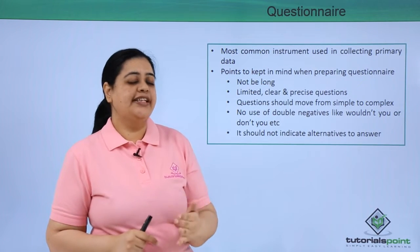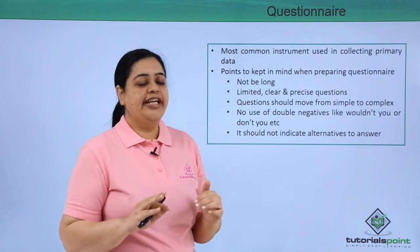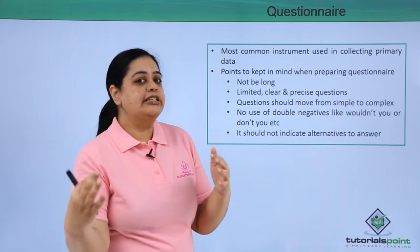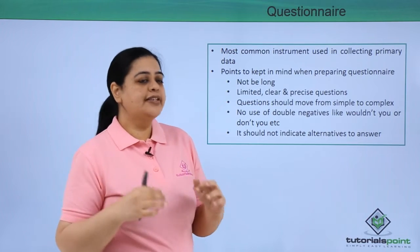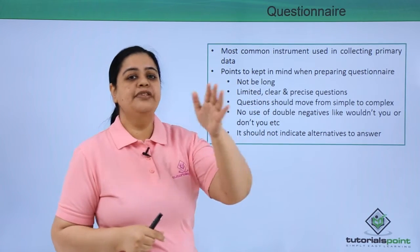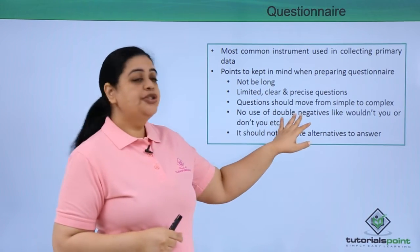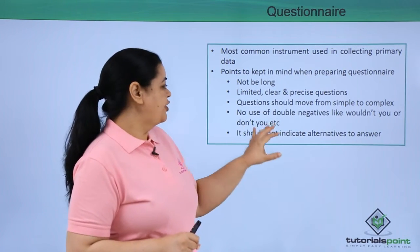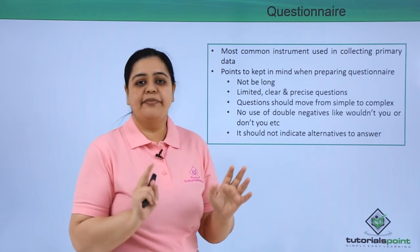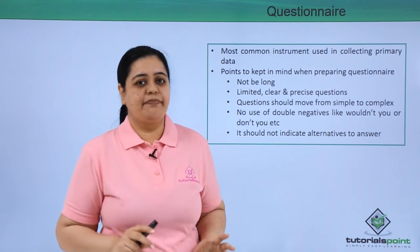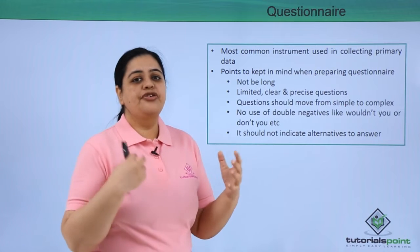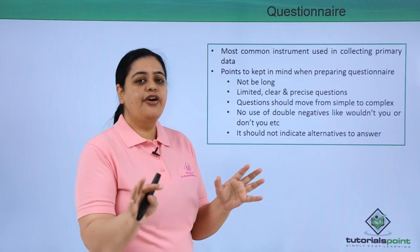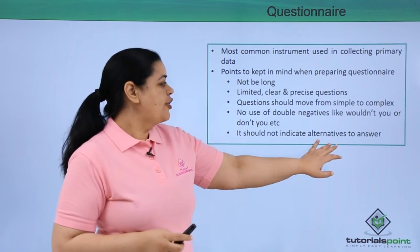Questions should move from simple to complex. As you may have seen in data surveys, it starts with your name, age, marital status, and then moves on to complex questions. You should not use double negatives — the question shouldn't have 'wouldn't you' and 'don't you' together. Your question should have no negatives if possible, or at most just one negative.